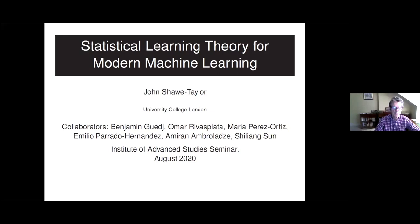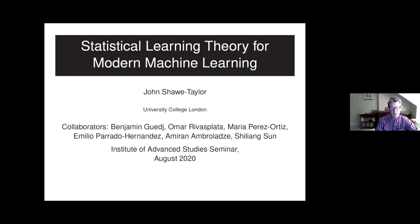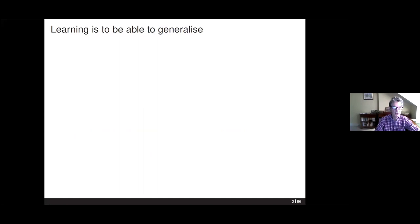I wanted to highlight some of the issues of statistical learning theory, the classical versions thereof and their shortcomings, but how these have been, to a large extent, overcome for modern machine learning and even for deep learning in certain scenarios. I'm not claiming a kind of panacea, but there are certain scenarios in which we can achieve really quite accurate bounds. There's plenty more to do, but the idea that there's no hope of analyzing deep learning, from a generalization point of view, is certainly not the case. I'll move to a general introduction, which I'll skip through quite quickly.